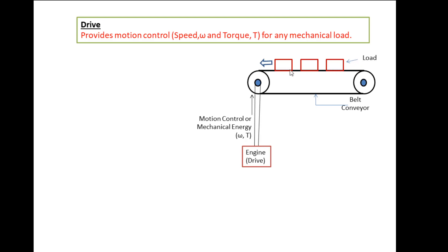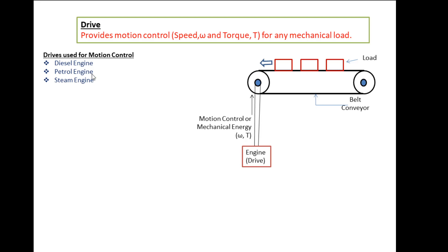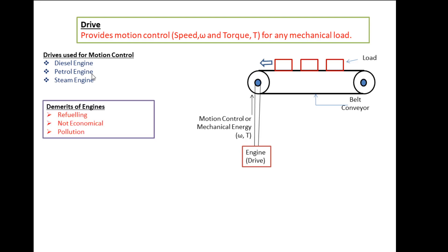So in short, a drive provides mechanical energy to move a load from one place to another, either horizontally or vertically. The types of engines or prime movers include diesel engines, petrol engines, and steam engines, as well as hydraulic motors and steam turbines. These mechanical drives have drawbacks such as refueling — they use diesel and petrol as fuel, which is costly and not economical.